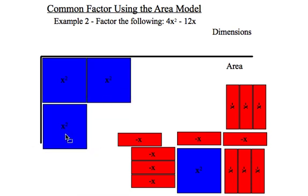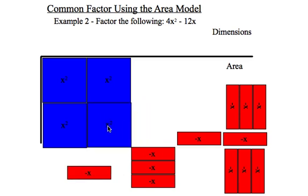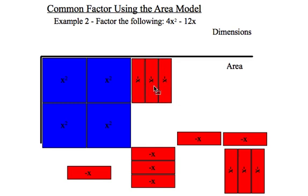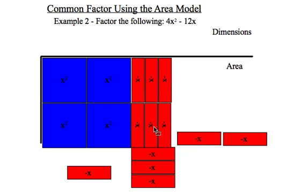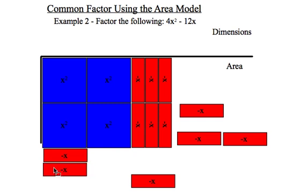And we'll see what happens. A lot of this is trial and error until you get the hang of it, so don't be disappointed if it doesn't work the first time. So now I have my x squared terms arranged, I'll place my negative x's here next to them, again matching up the same side lengths.